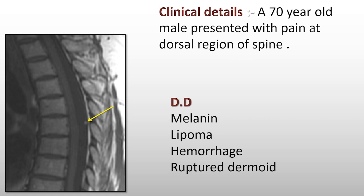Another possibility is a ruptured dermoid cyst with dissemination of fat droplets into the subarachnoid space, which can present in a similar manner. To differentiate these, we can perform a fat-saturated sequence: lipoma and dermoid cyst should show signal suppression. If it is not suppressed, it is more likely protein, melanin, or hemorrhage — protein can also appear T1 bright. A fat-saturated sequence was performed, and the lesion is not suppressed.